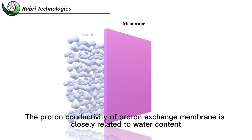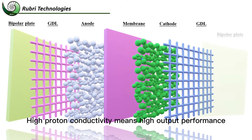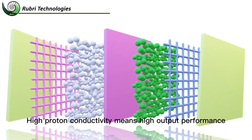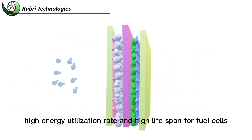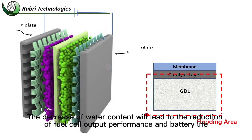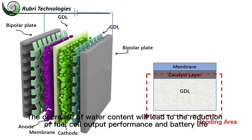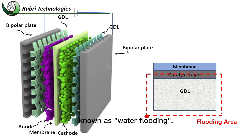The proton conductivity of the proton exchange membrane is closely related to water content. High proton conductivity means high output performance, high energy utilization rate, and high lifespan for fuel cells. Decreased water content leads to reduced output performance and battery life. However, too much liquid water in the reactor would hinder the internal reaction, known as water flooding.